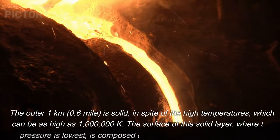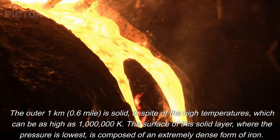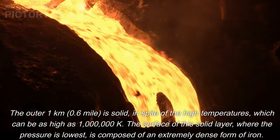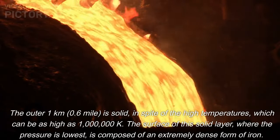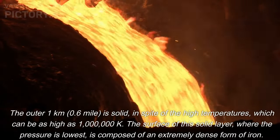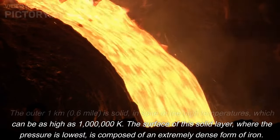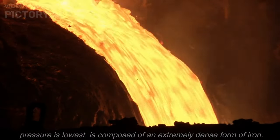The intermediate layers are mostly neutrons and are probably in a superfluid state. The outer 1 kilometer, 0.6 mile, is solid, in spite of the high temperatures, which can be as high as 1 million K. The surface of this solid layer, where the pressure is lowest, is composed of an extremely dense form of iron.